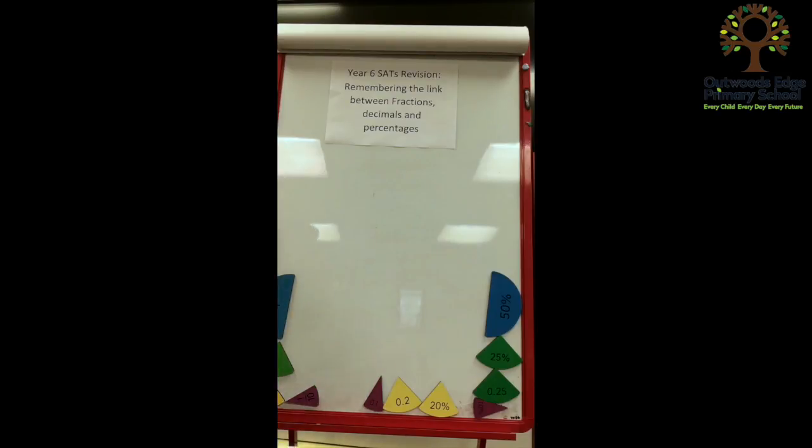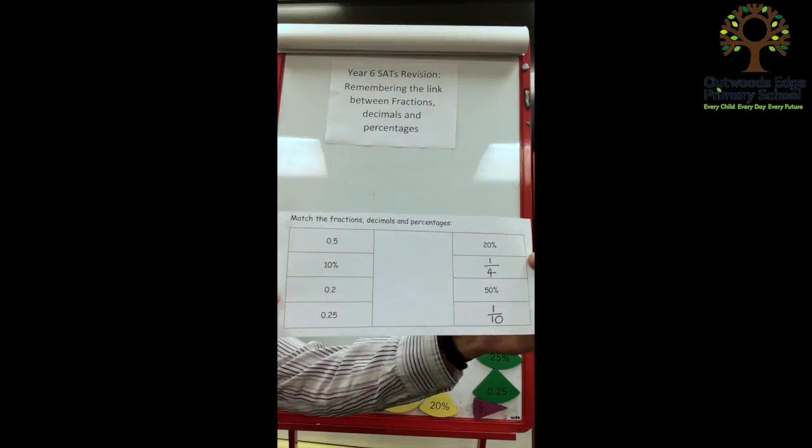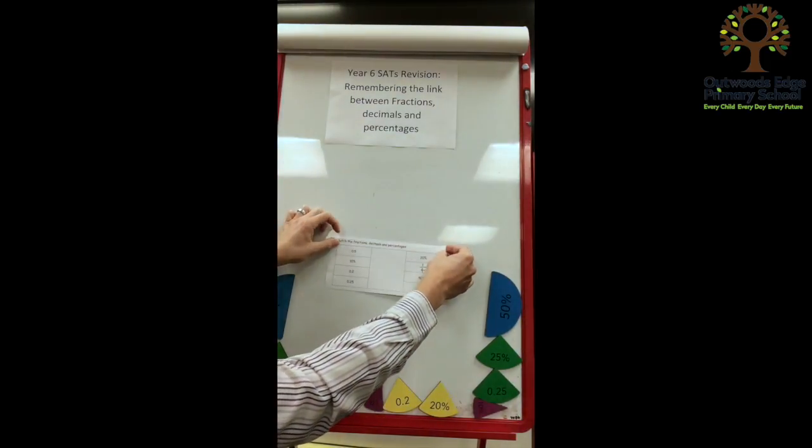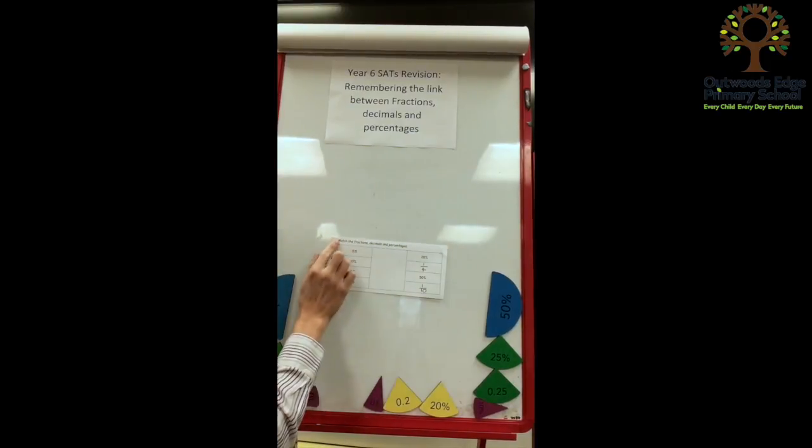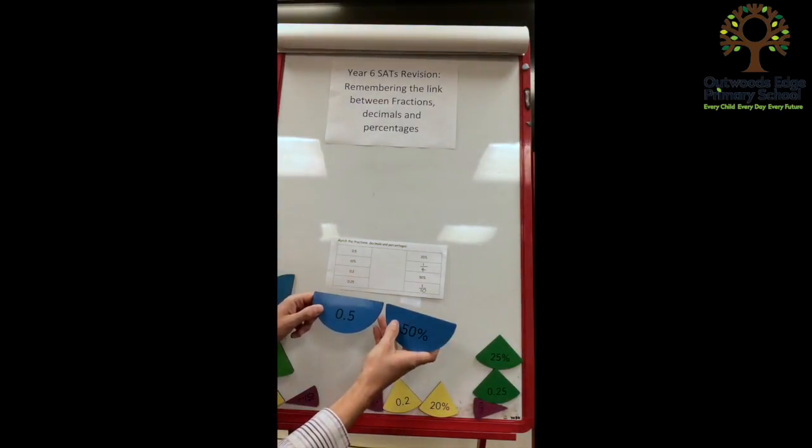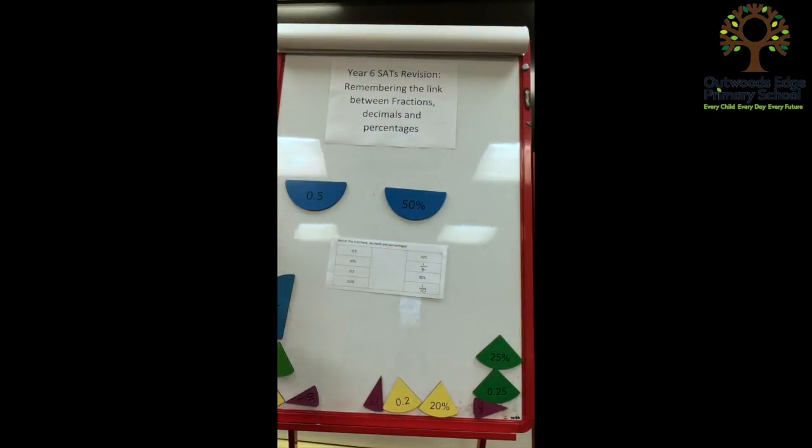We're trying to match fractions, decimals and percentages. So the first one we've got is 0.5 and 0.5, hopefully using the knowledge that we've retained, is equivalent to 50%. So we can draw a line from 0.5 to 50%.